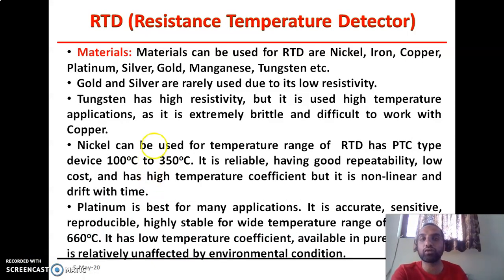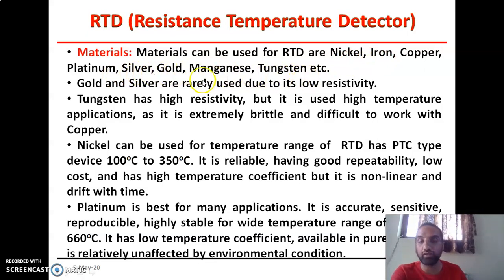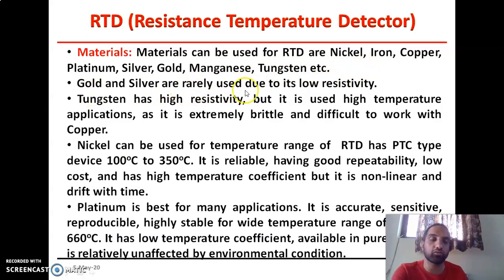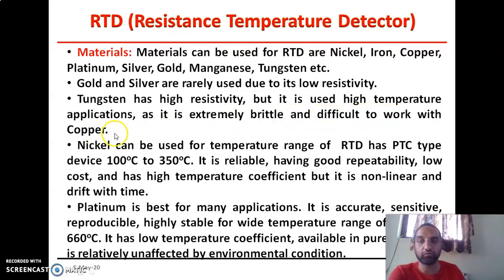Materials that can be used for the construction of RTDs include nickel, iron, copper, platinum, silver, gold, manganese, tungsten, etc. Amongst all these materials, gold and silver are rarely used because of their low resistivity. Tungsten has high resistivity and is used in high-temperature applications, but it is extremely brittle and very difficult to work with, so tungsten is not used in the majority of RTD applications.